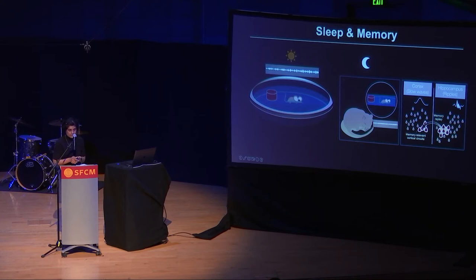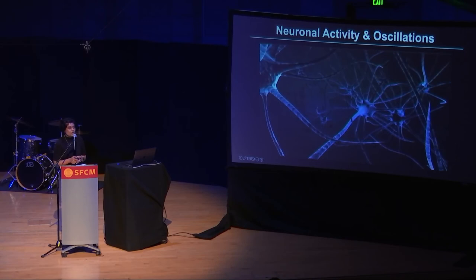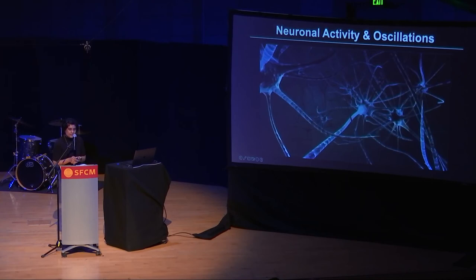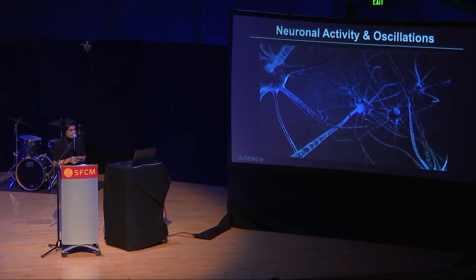Let me tell you a little bit more about the neurons which are producing these oscillatory rhythms in our brains. There are millions and millions of neurons in our brains connected to each other via tiny little junctions called synapses. These neurons are either excitatory or inhibitory.